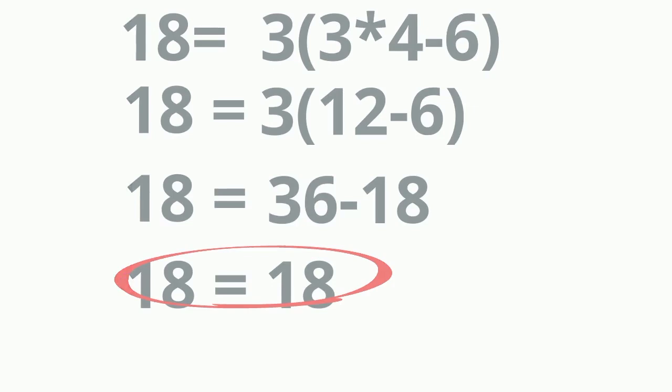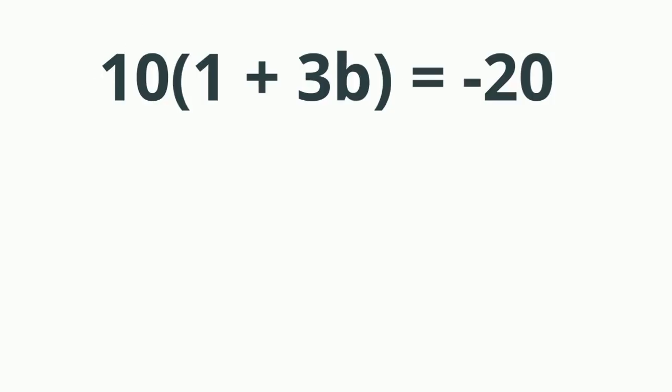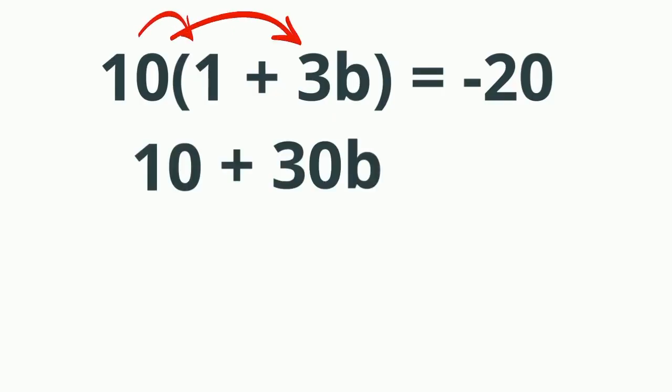Next, I have 10 in parentheses 1 plus 3b equals negative 20. I'm going to deal with the parentheses first, so I'll distribute the 10. That's 10 times 1 is 10, 10 times 3b is 30b, equals negative 20.